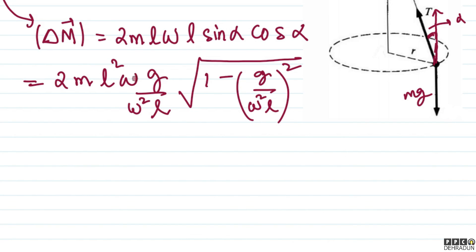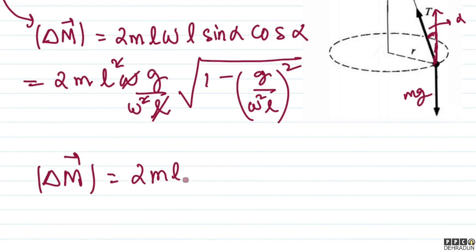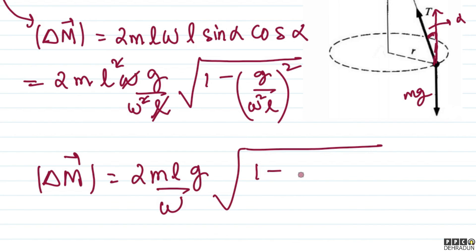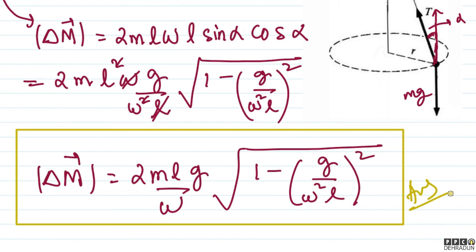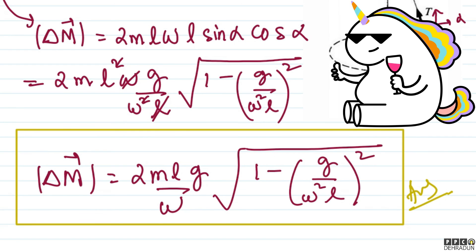After simplification, one factor of l and one factor of omega cancel, giving the final answer: the magnitude of delta M vector equals 2mgl divided by omega, multiplied by the square root of 1 minus (g / omega squared l) squared. This completes both parts of the problem. I hope the solution was clear — if you have any doubts, feel free to contact me. Take care, bye bye.